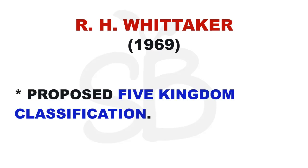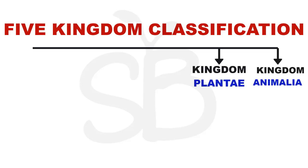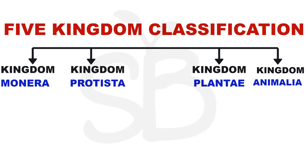The scientists proposed five kingdoms. There are an extra three kingdoms which are included: Kingdom Plantae, Kingdom Animalia, and the new ones — Kingdom Monera, Kingdom Protista, and Kingdom Fungi.